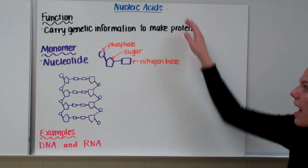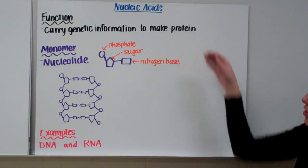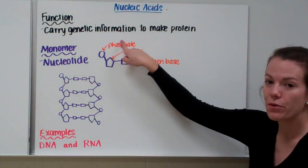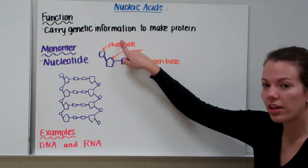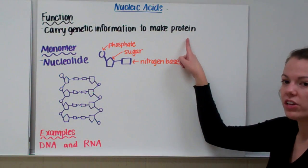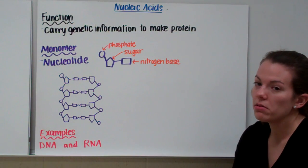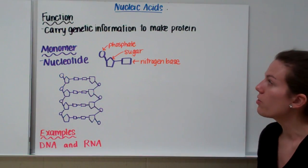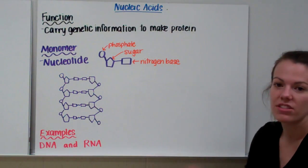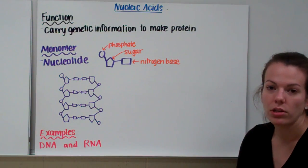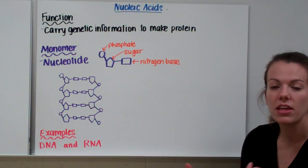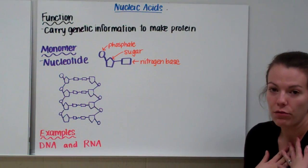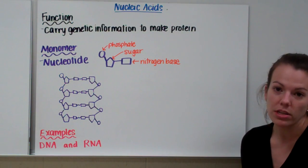Now let's take a closer look at nucleic acids. The function of nucleic acids is to carry genetic information in cells, and we use that genetic information to make proteins. If you don't have any nucleic acids, you don't have your recipes to make proteins. Think of nucleic acids as the recipe books for making proteins. The reason you look different from someone else is because you have different genetic information, and so you have different proteins in your body.